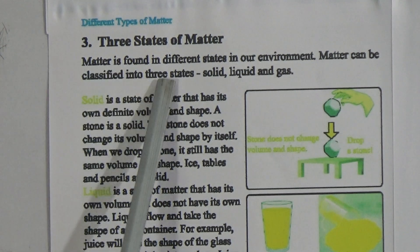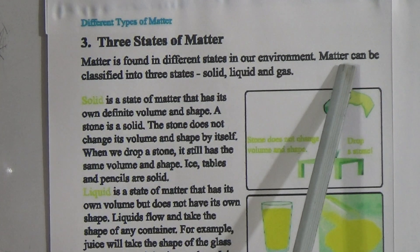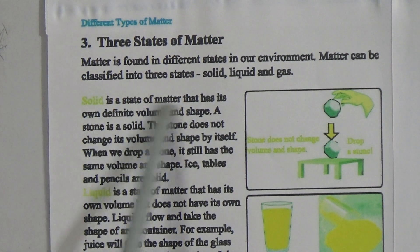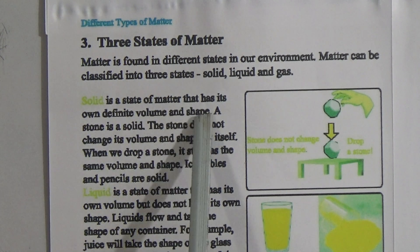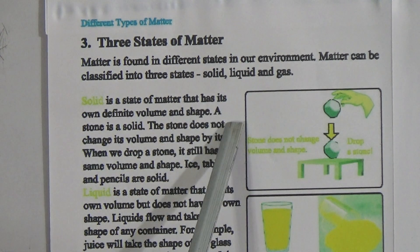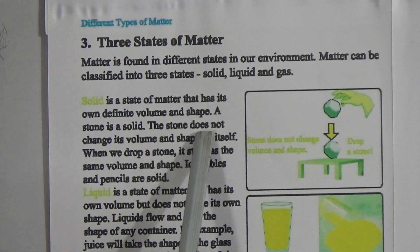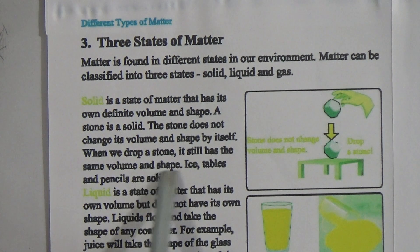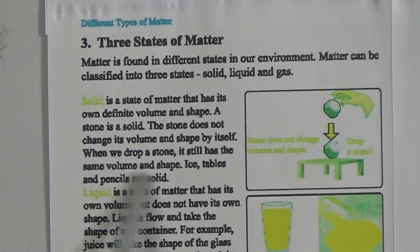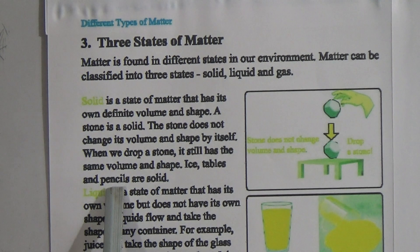Now let us look at the different types of matter — that means the three states of matter. Matter is found in different forms in our environment and can be classified into three states: solid, liquid, and gas. Solid is the state of matter that has its own definite volume and shape. A stone is a solid — it does not change its volume and shape by itself. Ice, table, and pencil are all solids.